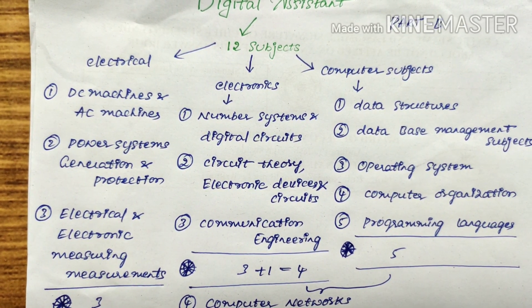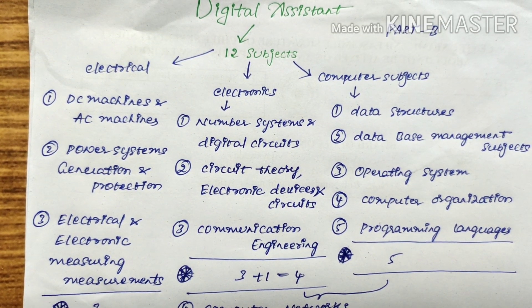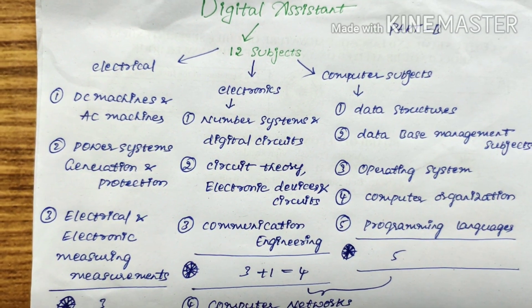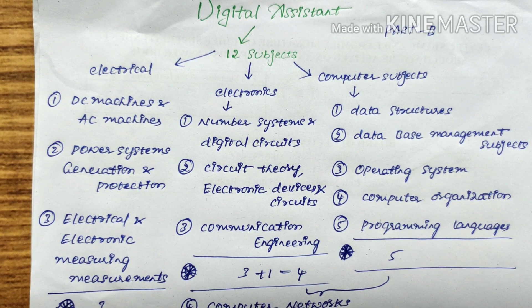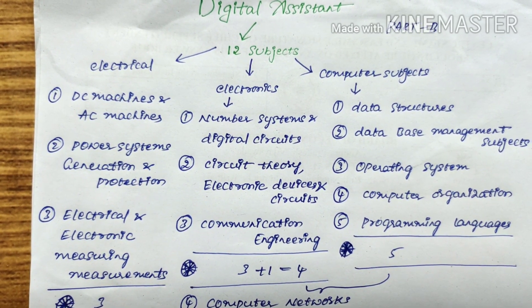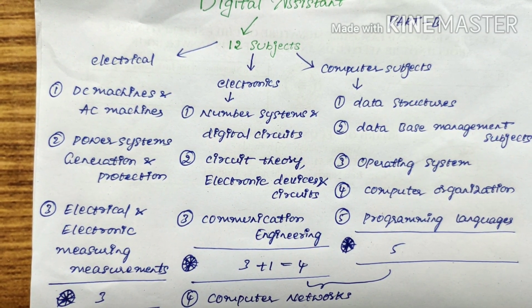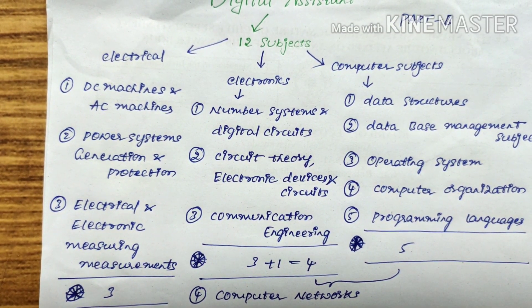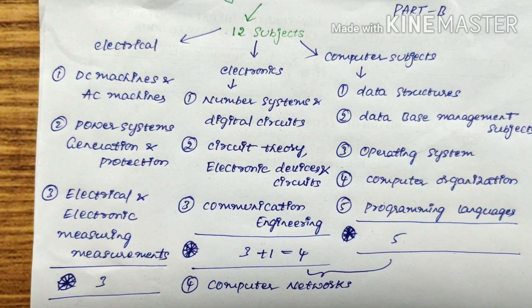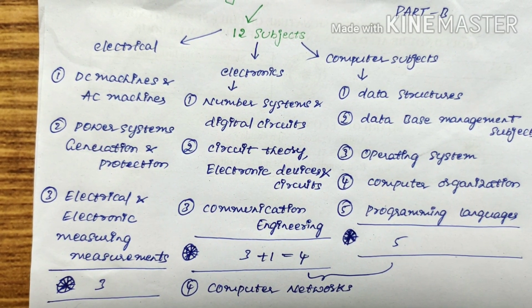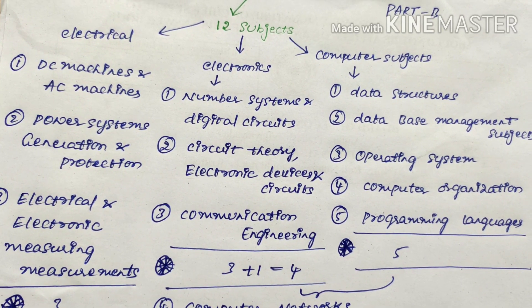The 12 subjects can be mainly divided into three subcategories: electrical, electronics, and computer subjects. Computer subjects are mostly five subjects: Data Structures, Database Management System, Operating System, Computer Organization, and Programming Languages. For electrical students, three topics are prioritized: DC Machines, Power System Generation and Protection, and Electrical and Electronic Measurements. For electronics students, the subjects include Number Systems and Digital Circuits, Circuit Theory, Electronic Devices and Circuits, and Communication Engineering. These three subcategories make up 11 subjects, with Computer Networking being the twelfth — common to both computer science and electronics students.